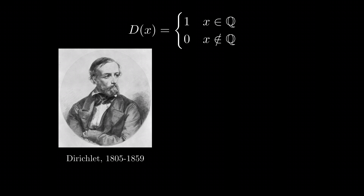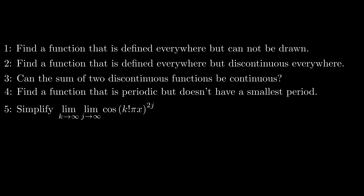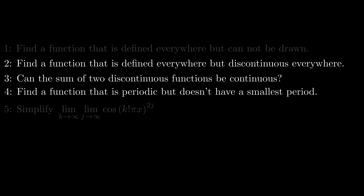Because all real numbers are either rational or irrational, this is a well-defined function over all real numbers. This function has a name: the Dirichlet function, invented by German mathematician Dirichlet. It is literally impossible to draw this function — even the tip of your pencil is made of a single carbon atom. The graph on the right is often used to represent it, because there isn't a better one.